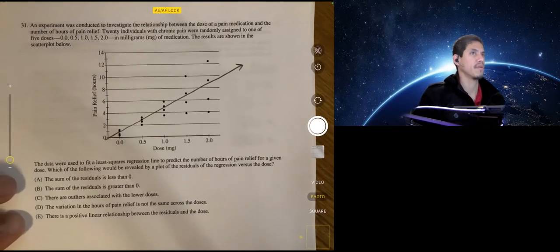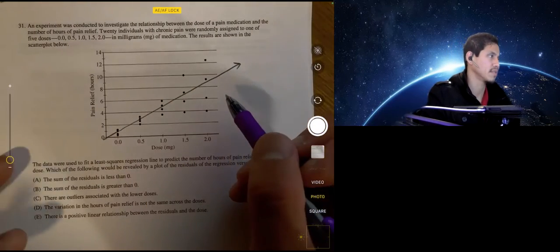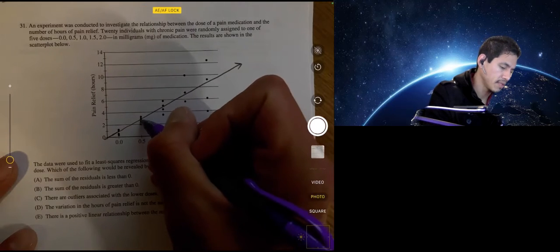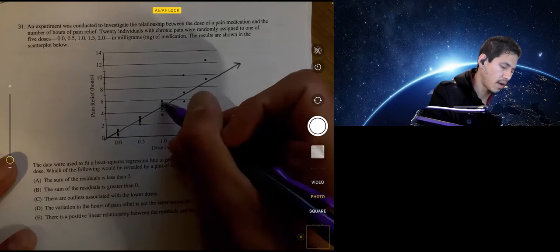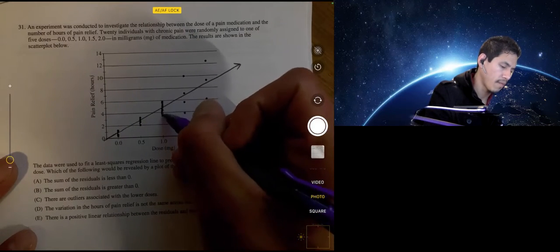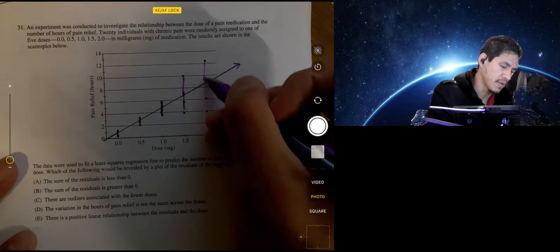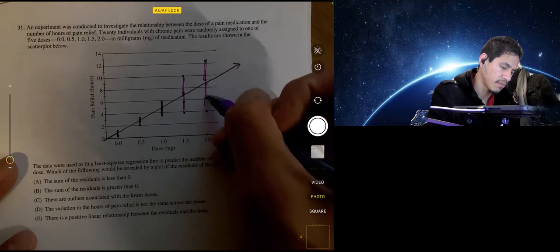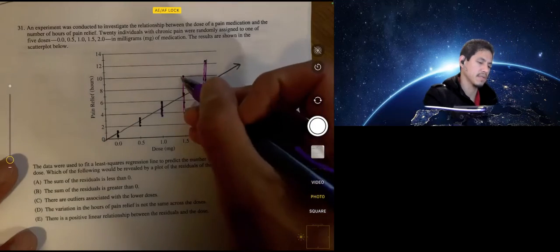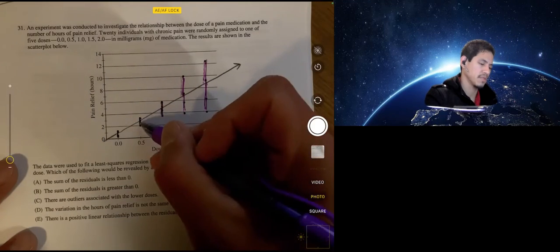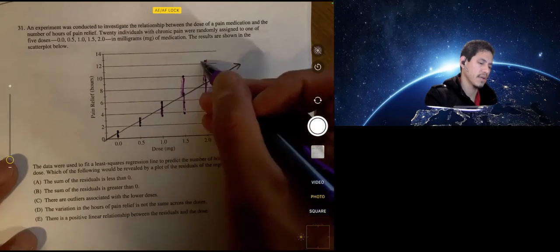Now let's review or let's remember that the residuals are essentially the values that the data points are from the least squares regression line measured vertically. So the residuals would be like the length of these line segments. So the residuals are small here, they get bigger here.